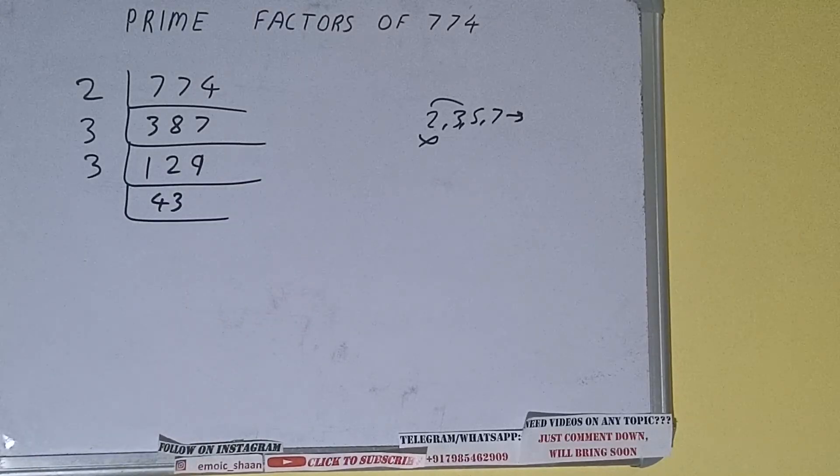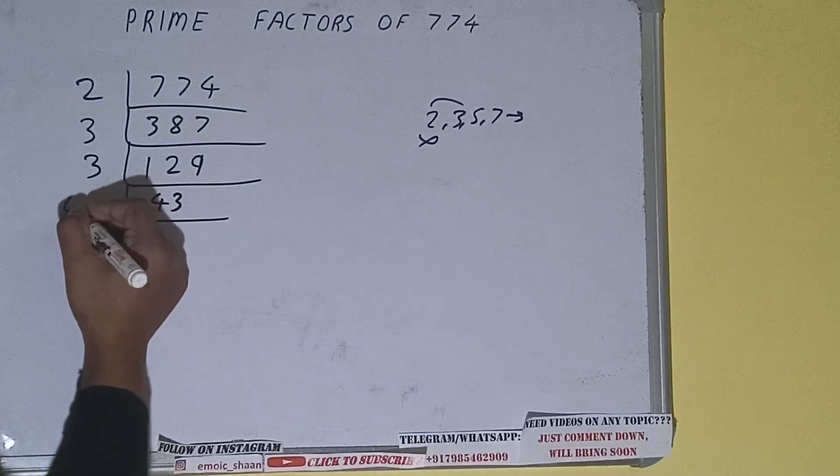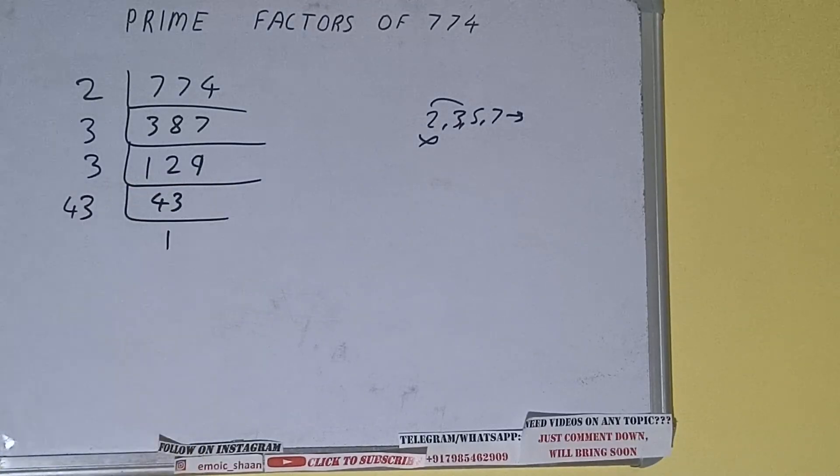Now 43 is not divisible by 3, and on top of that, 43 is also a prime number. So it is only divisible by itself, that is 43, and once we do so we'll be getting 1.